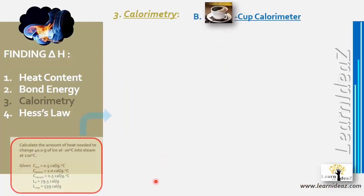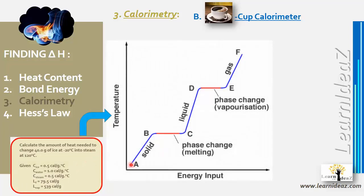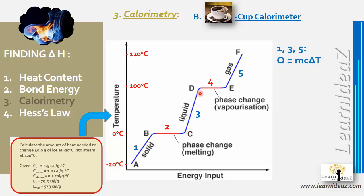The process has five steps: Step 1 — ice (solid) heats from −20°C to 0°C (temperature change only). Step 2 — phase change: melting at 0°C (solid to liquid). Step 3 — water (liquid) heats from 0°C to 100°C (temperature change only). Step 4 — phase change: vaporization at 100°C (liquid to gas). Step 5 — steam (gas) heats from 100°C to 120°C (temperature change only).